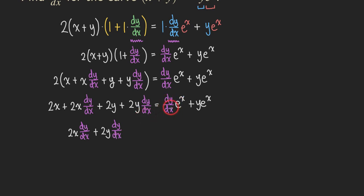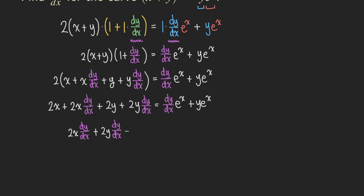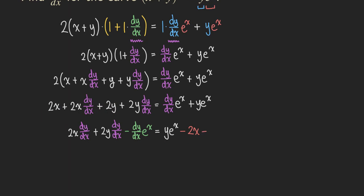Keeping 2x·dy/dx and 2y·dy/dx on the left side. I need to subtract the dy/dx·e^x term from both sides to move it to the left. So on the left we get: 2x·dy/dx plus 2y·dy/dx minus dy/dx·e^x. On the right: y·e^x. Then I subtract 2x and 2y from both sides, giving negative 2x and negative 2y on the right.